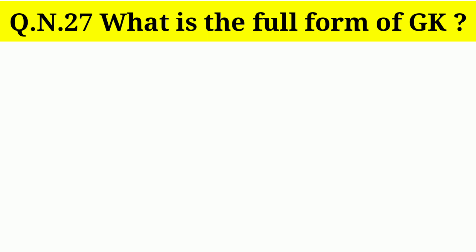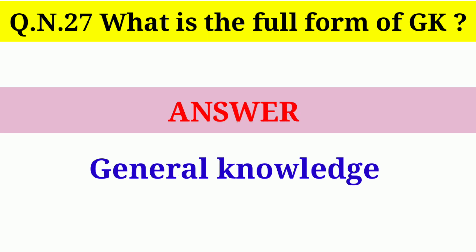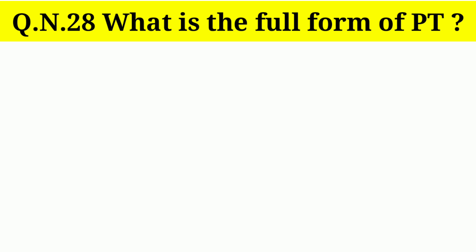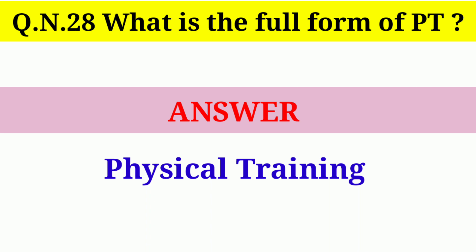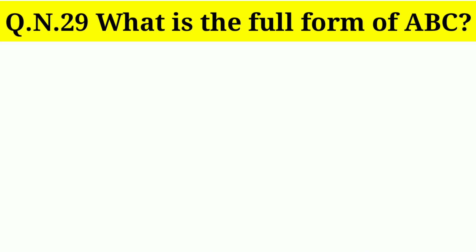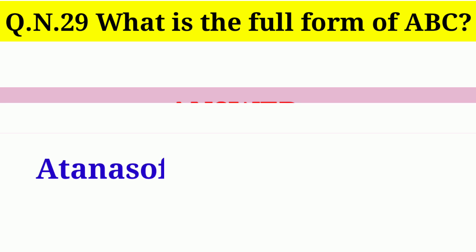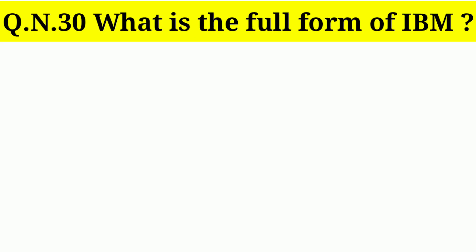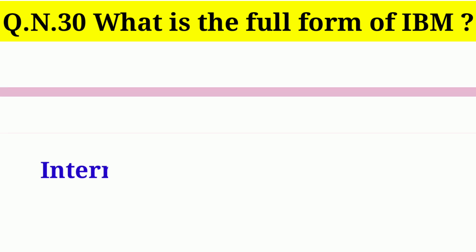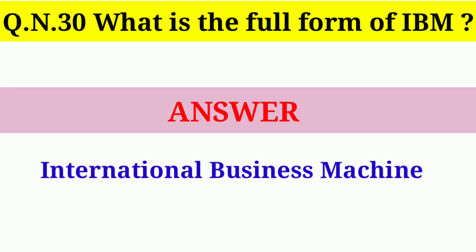Question number 27: What is the full form of GK? Answer: General Knowledge. Question number 28: What is the full form of PT? Answer: Physical Training. Question number 29: What is the full form of ABC? Answer: Basics of Every Computer. Question number 30: What is the full form of IBM? Answer: International Business Machines.